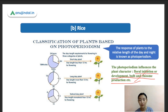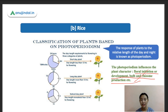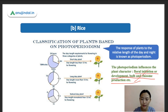Short-day plants develop normally when the photoperiod is less than the critical maximum of 12 hours. Long-day plants develop and produce normally when the photoperiod is greater than the critical minimum of 12 hours — they need a day length of more than 12 hours. Day-neutral plants are not affected by the photoperiod at all.